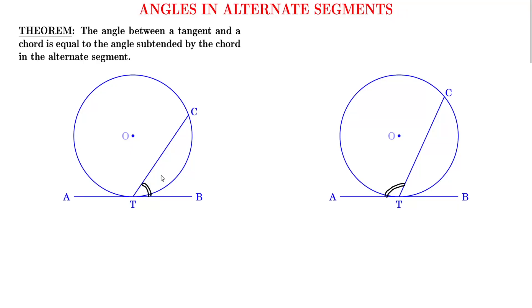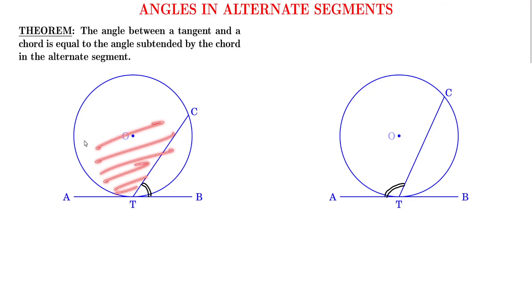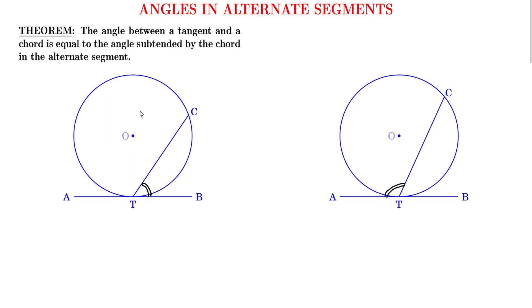In this video, we'll be looking at angles in alternate segments. In the diagram below, there's a chord TC and there's a tangent AB. There's a segment that contains the angle formed between the chord and the tangent — the shaded segment. This segment is said to be alternate to the other segment of the circle. Our theorem states that the angle between the tangent and the chord is equal to the angle subtended by the chord TC in the alternate segment.